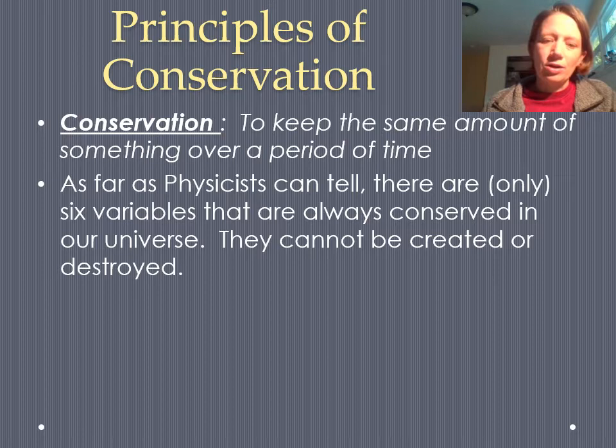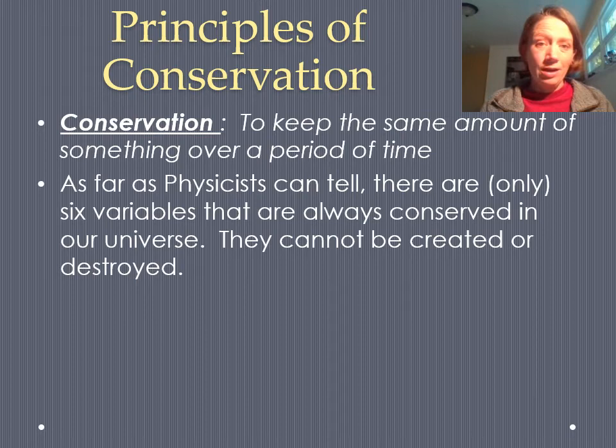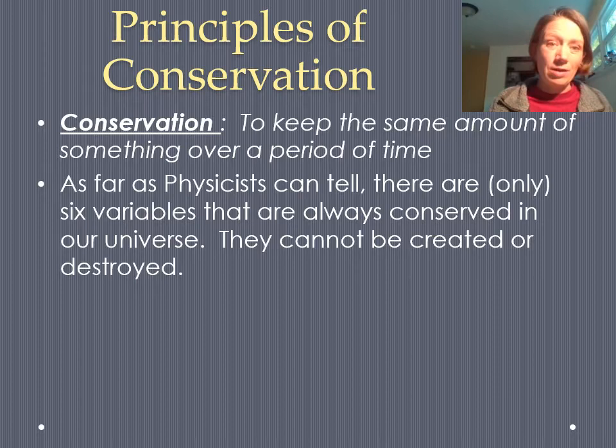Interestingly, as far as physicists can tell, there are actually six things that are conserved in the universe. That's a pretty small number when you consider all of the variables in the universe. These are not the same as the six fundamental constants — these are six different things that cannot be created or destroyed. When the Big Bang happened, we had a certain amount of these things, and we still have the same amount now. That's pretty amazing.